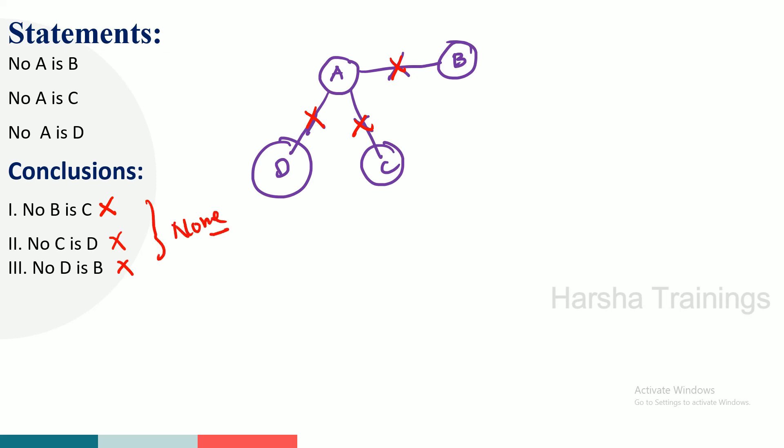If there is a cross line, it means wrong — not follows. We already explained this in the previous fundamentals video — no, some, all, some not. If you watch the fundamentals video first, the problems become clear. If you directly jump to problems without fundamentals, there is a lot of confusion. If there is a cross line, it is wrong — not follows. Got the point, all of you?